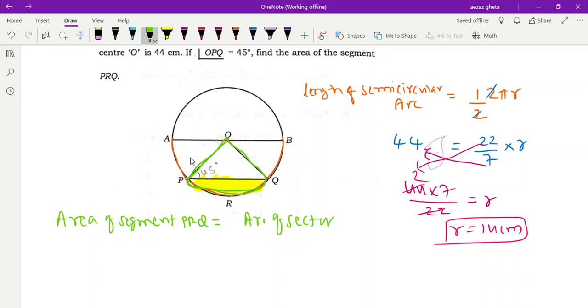This sector, this green color sector - from this sector you should subtract it minus area of triangle POQ. Area of sector is theta divided by 360 into πr². Area of triangle is half into base into height because it is a right angle.